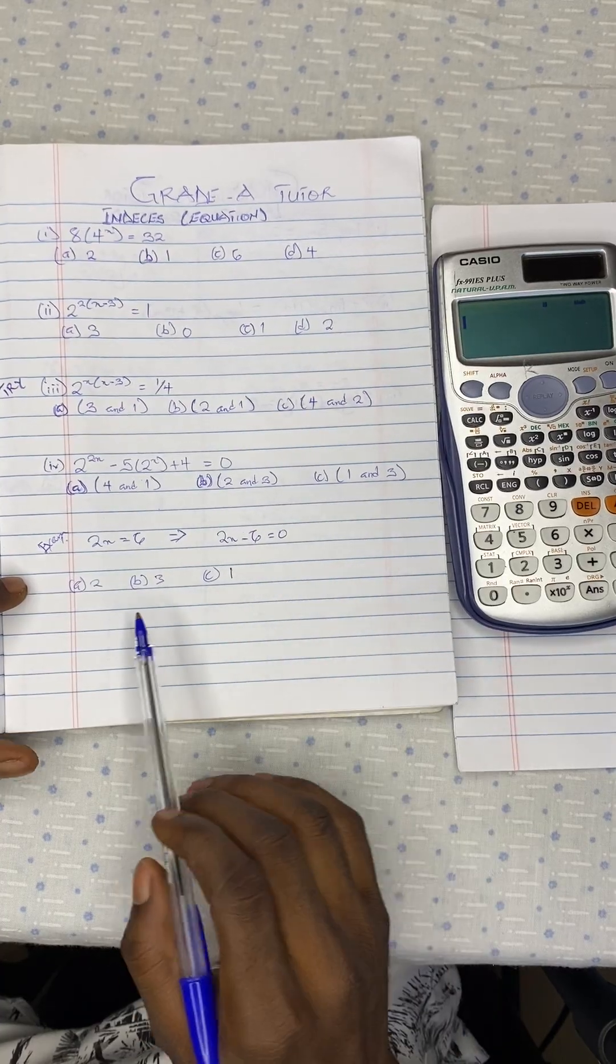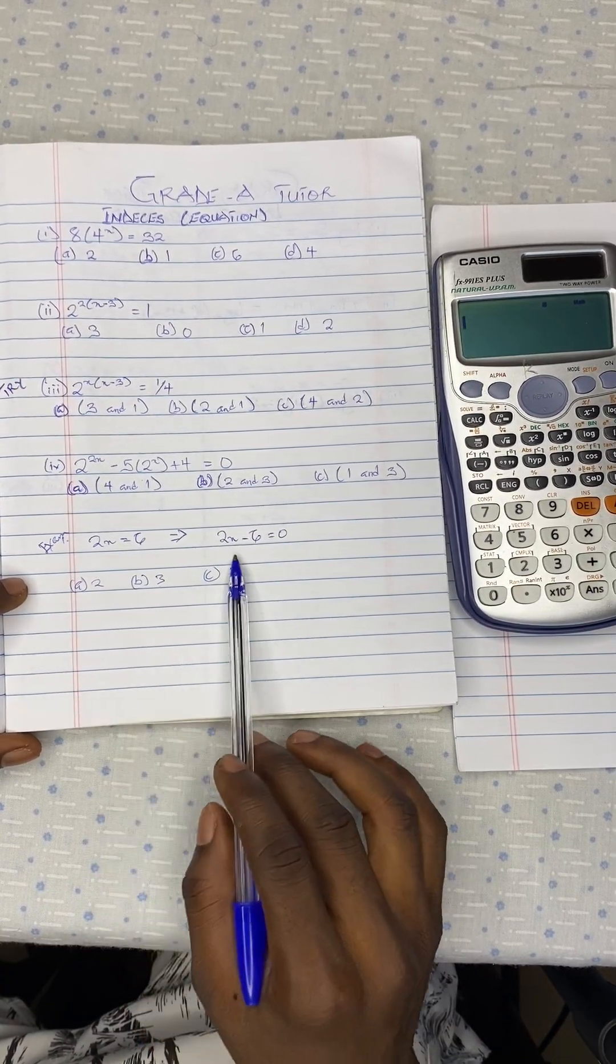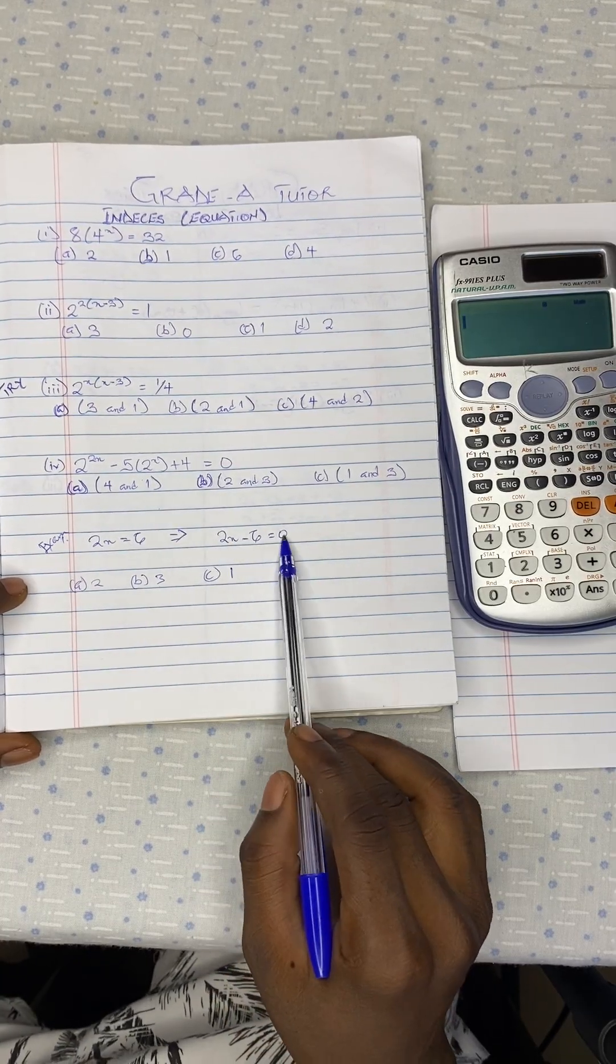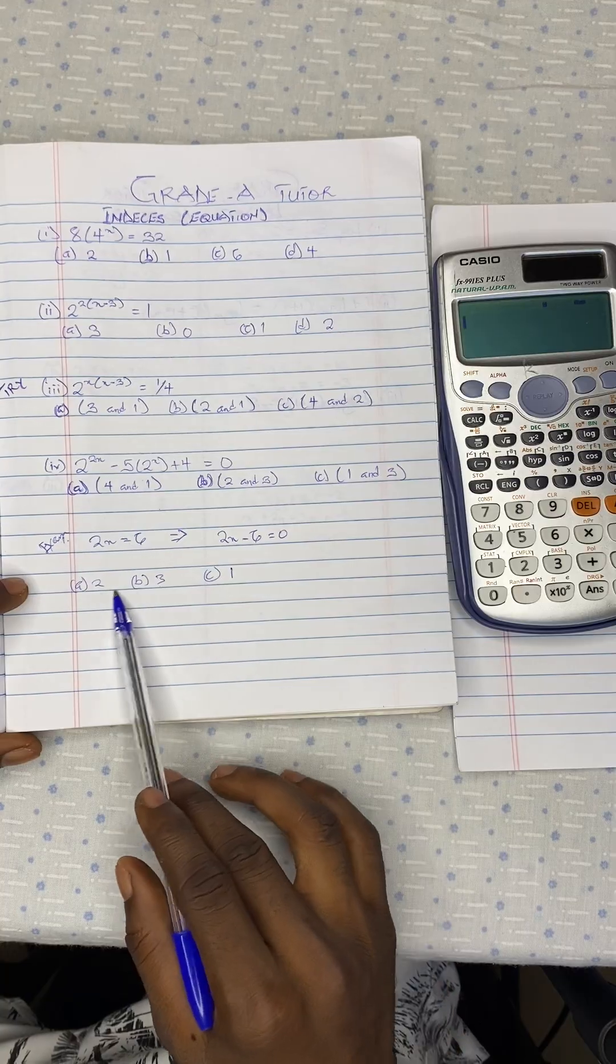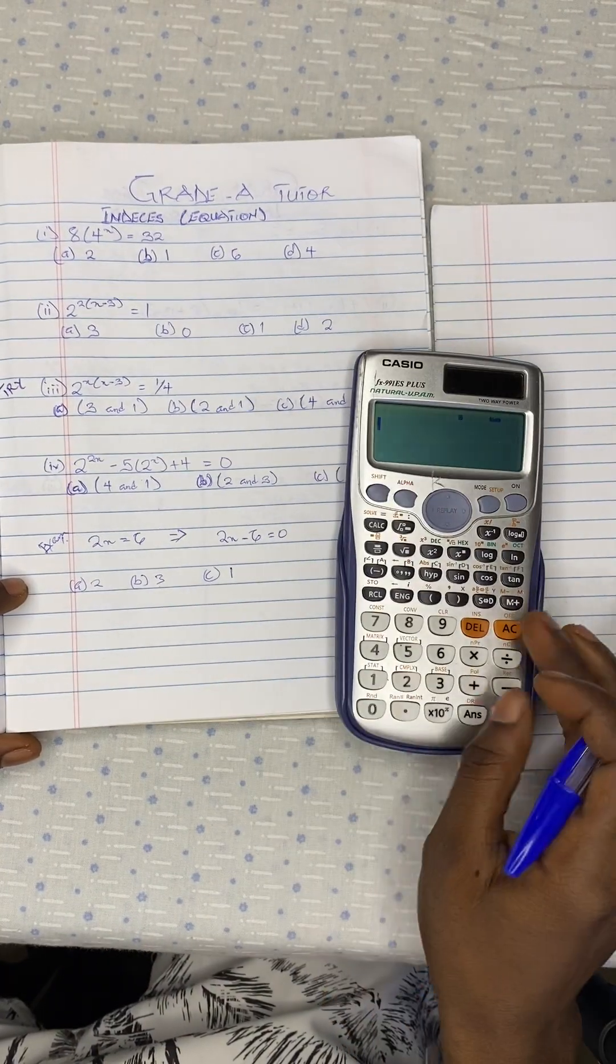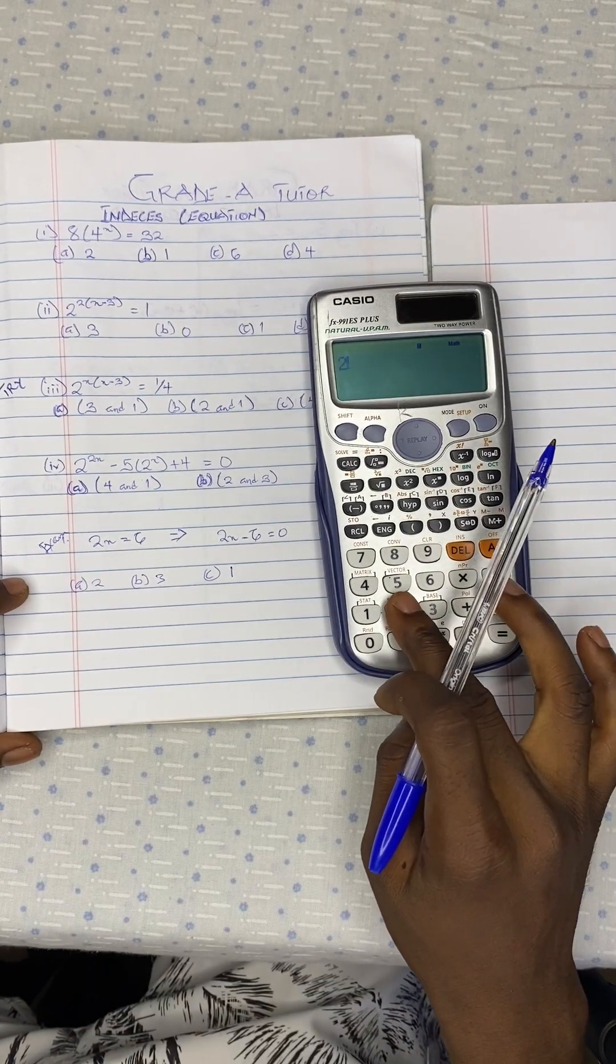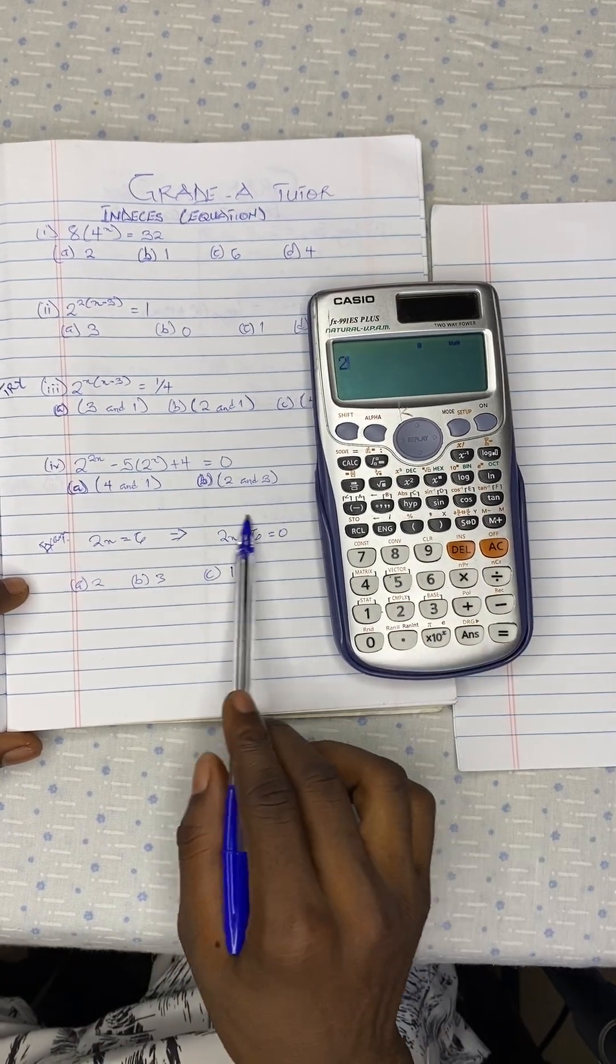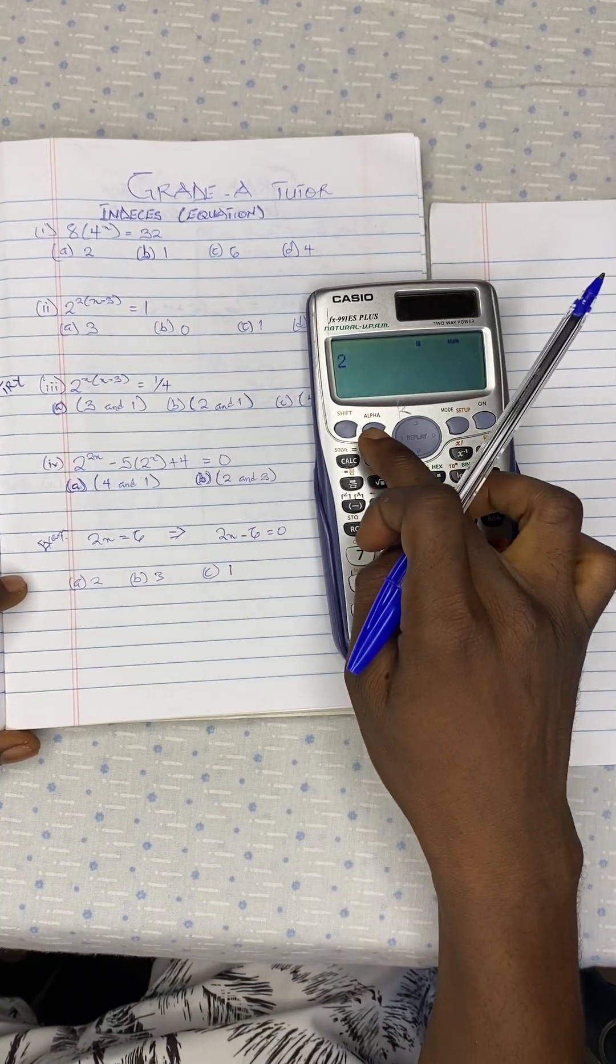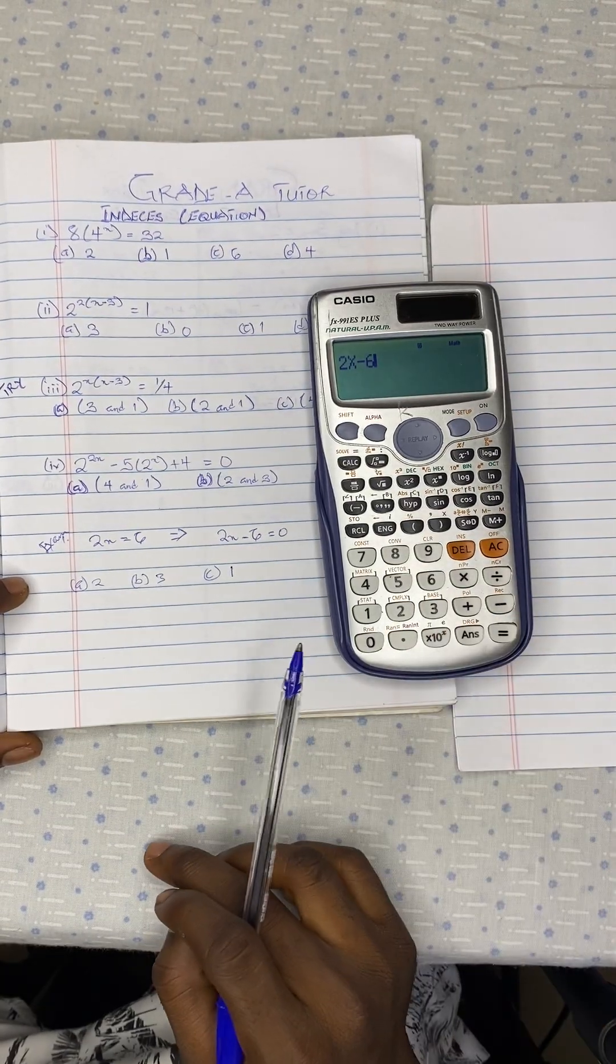We are going to substitute each of the options in place of the x. If we get our answer to be 0, it means that particular option is correct. So we have the first option to be 2. First of all, just input the question. So 2, then x minus 6.